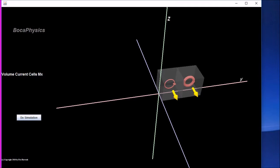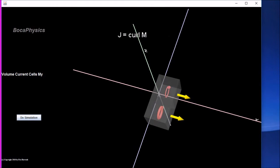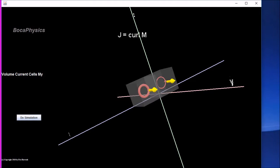A similar analysis is done on two adjacent cells that lie along the x-axis and we consider the y component of the magnetization. The net current due to these two cells is the partial derivative of the y component of M with respect to x times del x del y.